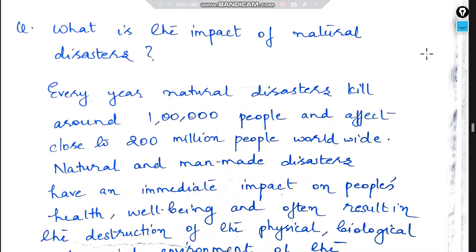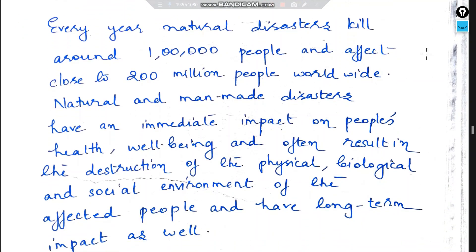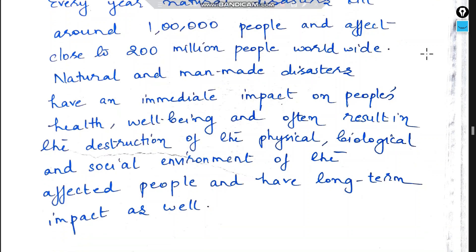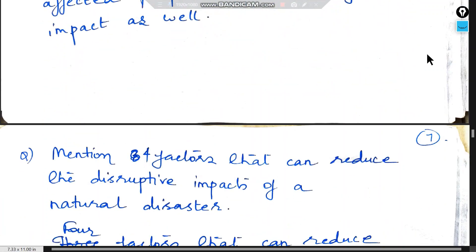What is the impact of natural disasters? Every year, natural disasters kill around 1 lakh people and affect close to 200 million people worldwide. Natural and man-made disasters have an immediate impact on people's health and well-being, and often result in the destruction of the physical, biological, and social environment of the affected people, with long-term impact as well.